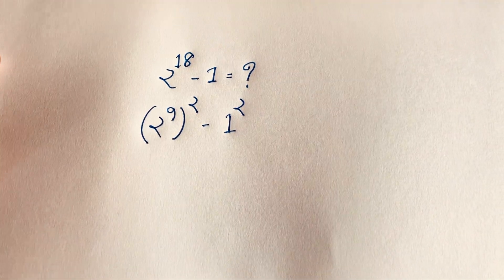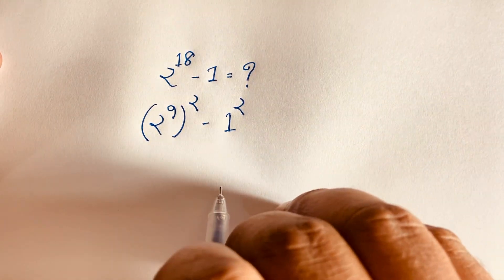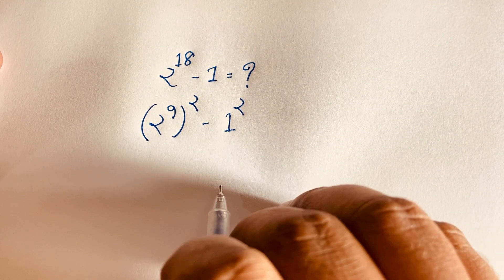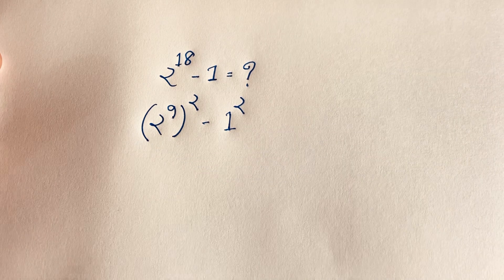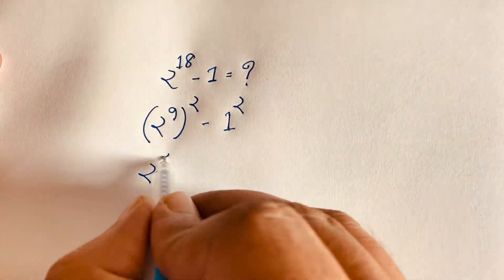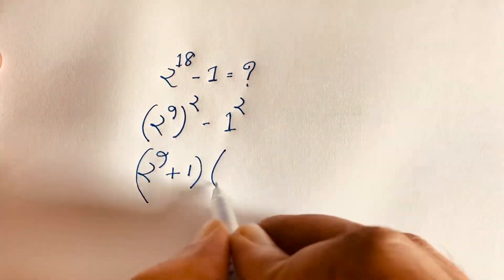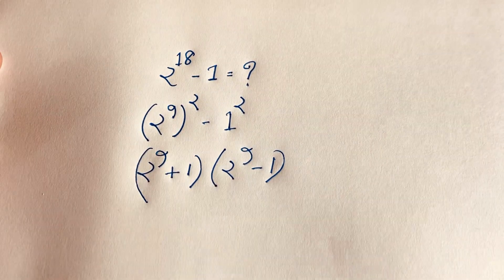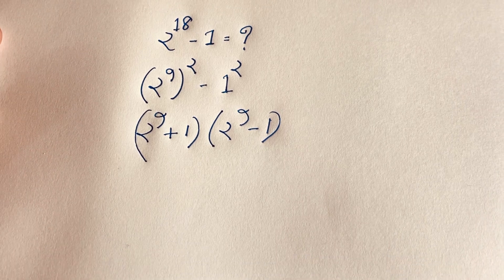You can write it as a² minus b², which factors as (a + b)(a - b) according to this formula. So it will be (2 to the power 9 plus 1) times (2 to the power 9 minus 1).